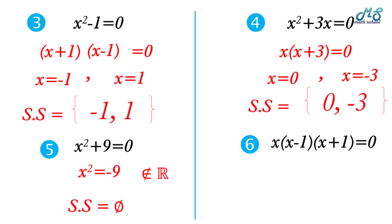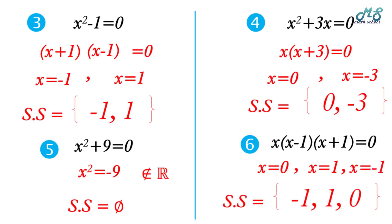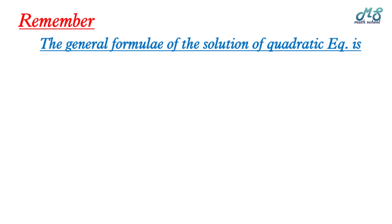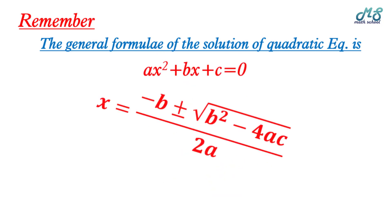Number six: x times x minus 1 times x plus 1 equals zero. We can deduce directly that x equals 0, x equals 1, and x equals negative 1. The solution set has three elements — {negative 1, 0, 1} — because this is a third-degree equation.